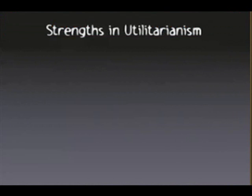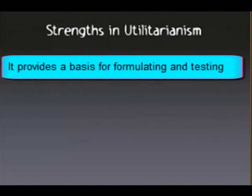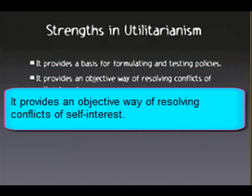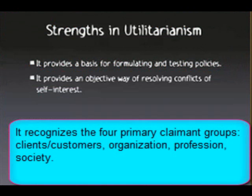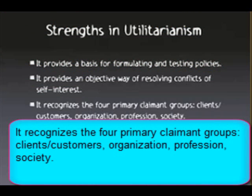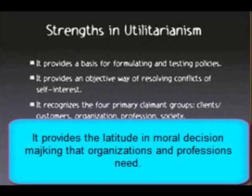What are some of the strengths of utilitarianism? First, it provides a basis for formulating and testing policies. It also provides an objective way of resolving conflicts of self-interest. It recognizes the four primary claimant groups: clients, customers, the organization itself, the profession you work in, and society as a whole. And it provides the latitude in moral decision making that organizations and professions need.